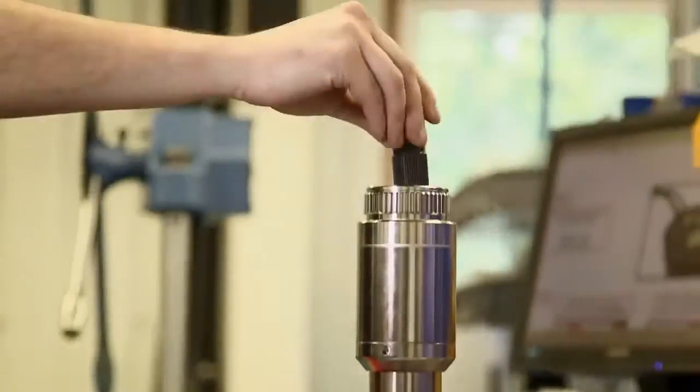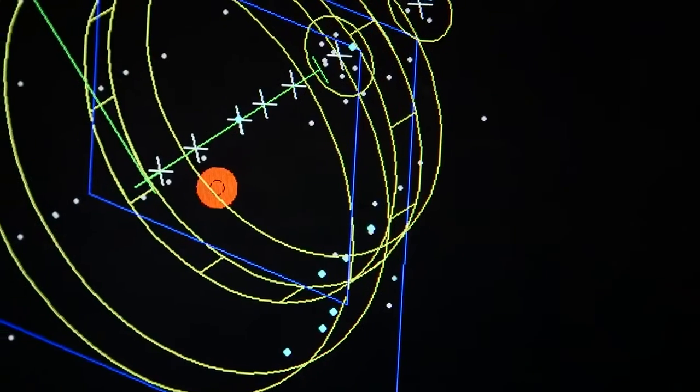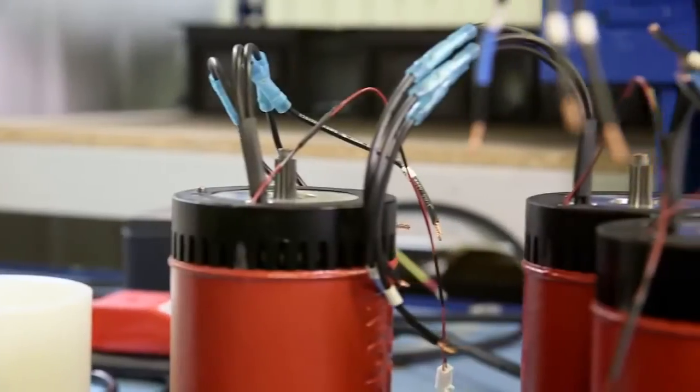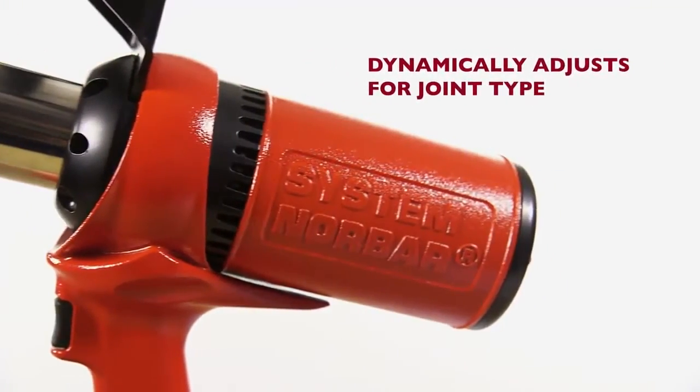Norbar set out to develop the best electronic torque tool available, which means the most accurate, most robust, easiest to use, and the quietest. And now we're proud to present the Evo Torque, which dynamically adjusts for joint type.